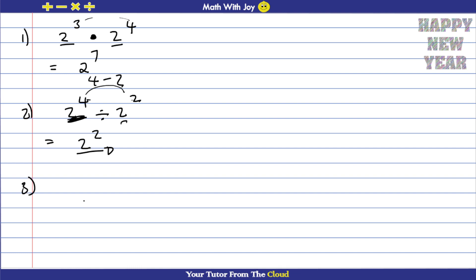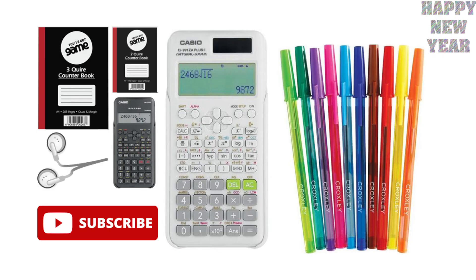Here's another one: if you have something raised to the power of zero — anything to the power of zero — the answer is simply 1. So if I have something like negative 4x squared y to the power of 10 z, and I raise this whole thing to the power of zero, the answer is just 1. There are more exponent laws, but make sure you learn these — they are very important and very common.